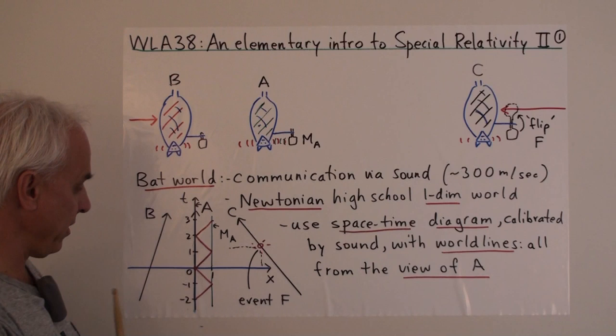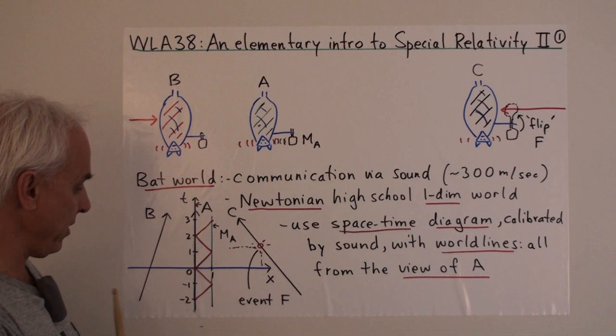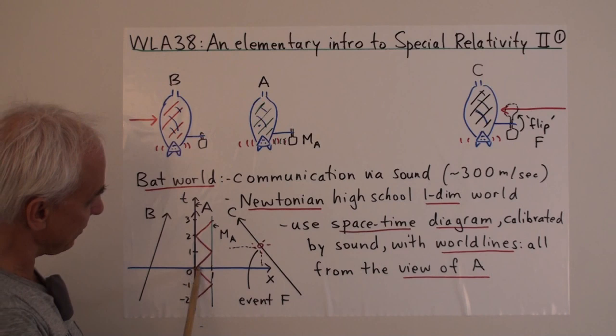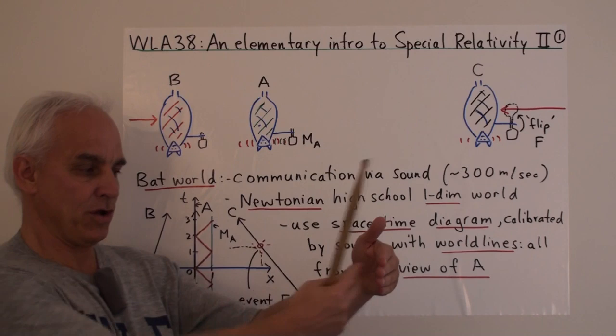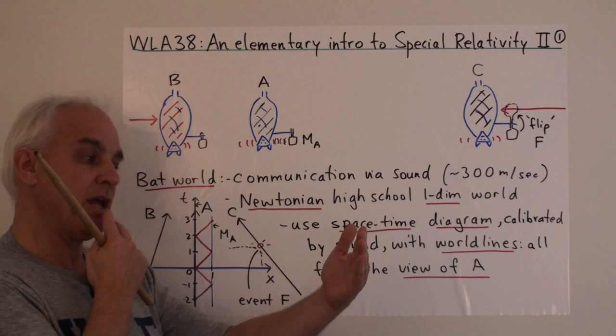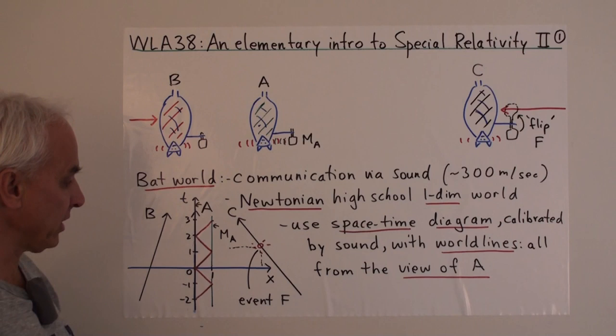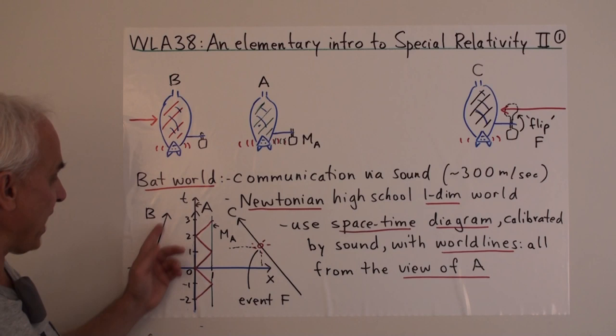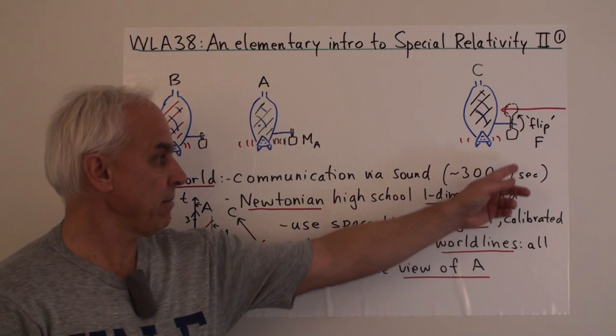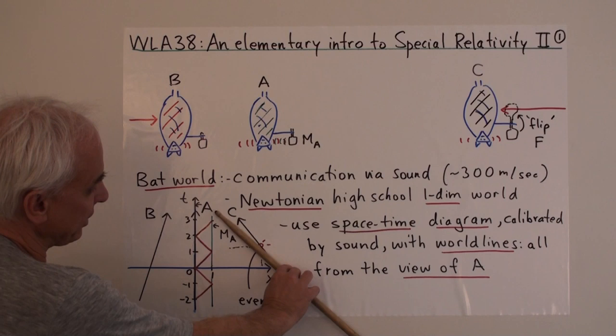Here is the world line of Bat A — it's not moving. And here's the world line of his mirror, and here are the sound signals. The calibration here is that of A: one unit is what he's decided his length to the mirror is going to be, and he's decided that the unit of time is such that in one unit of time the sound goes from him to his mirror and back again. In terms of the world diagram, here is Bat B's world line representing the motion of B on the x-axis throughout time. And here is C's world line — C is moving in this direction on the x-axis, at a slightly shallower angle because C is going a little bit faster.